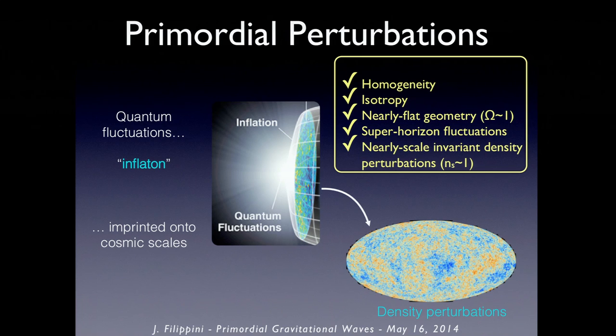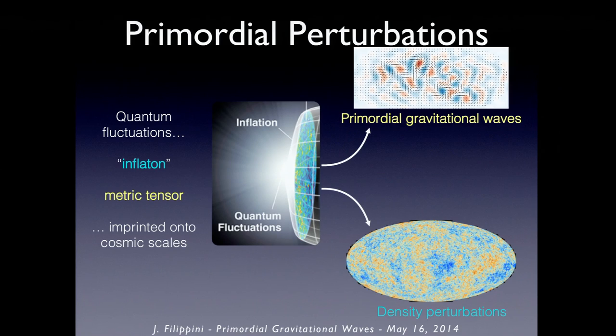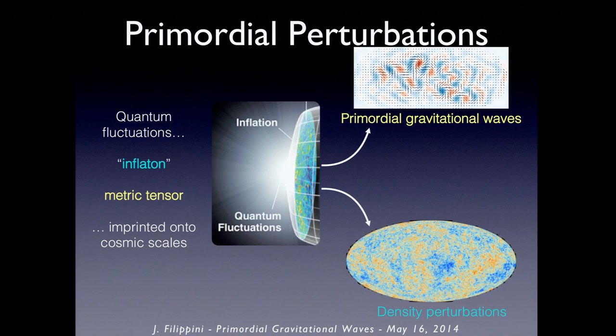These perturbations are what we see today — seen as hot and cold spots in the microwave background, and also in us. Everything around us, all of large-scale structure in the universe, is derived from the gravitational collapse of these quantum fluctuations, which is a really remarkable statement. This picture has been enormously successful, but it has one more prediction: there would also be quantum fluctuations that affect the tensor modes of the metric, appearing as primordial gravitational waves — a nearly scale-invariant spectrum over all scales. It's very hard to get such a spectrum from anything but inflation.